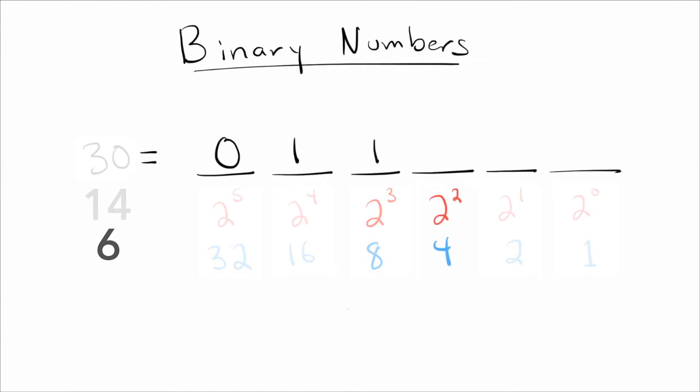All right. So how many fours are there in six? Again, there's one. Great. So I had six, I used up four, that leaves me with two. How many twos are there in two? Well, of course, there's one. And now I've used up everything, right? I'm down to zero. So there's certainly no ones in zero. So that's it. I just wrote 30 in binary.